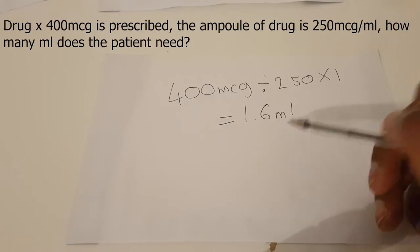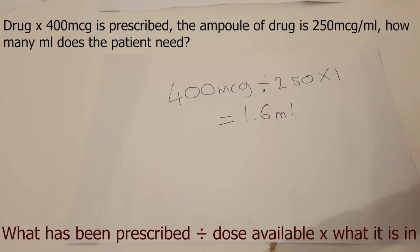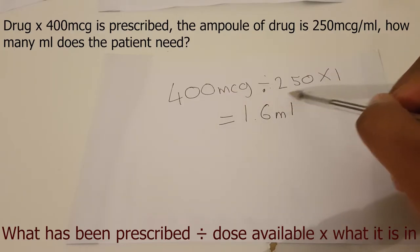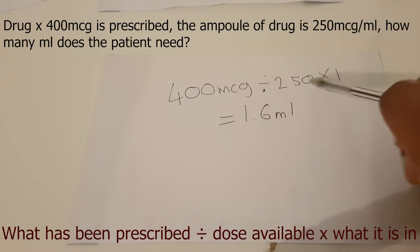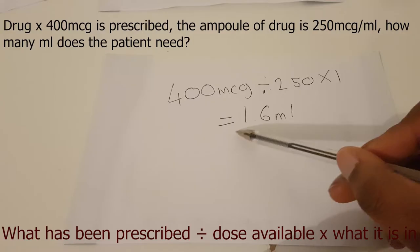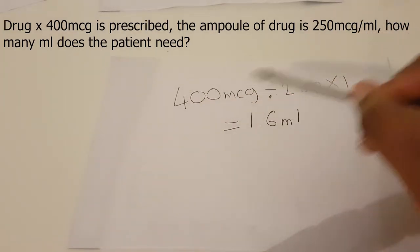The next question: Drug X 400 micrograms is prescribed. The ampoule of the drug is 250 micrograms per mil. How many mils do we give? We refer back to the same formula — what has been prescribed divided by the dose available multiplied by what it is in. So we do 400 micrograms divided by 250, multiplied by one, because there is 250 micrograms per one mil. That gives us 1.6 mils.